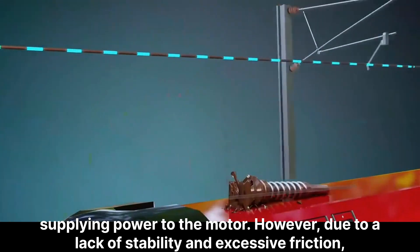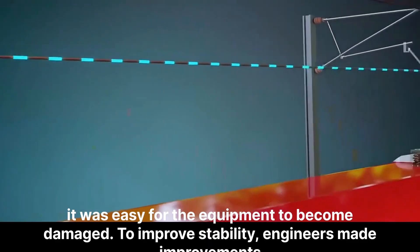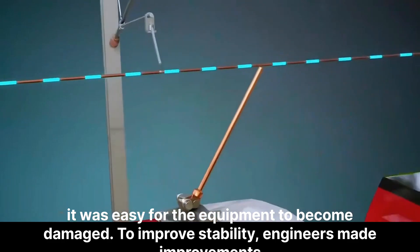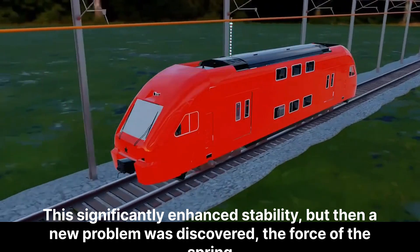However, due to a lack of stability and excessive friction, it was easy for the equipment to become damaged. To improve stability, engineers made improvements by tilting the conductor backward and readjusting the spring and the support structure of the pantograph. This significantly enhanced stability.